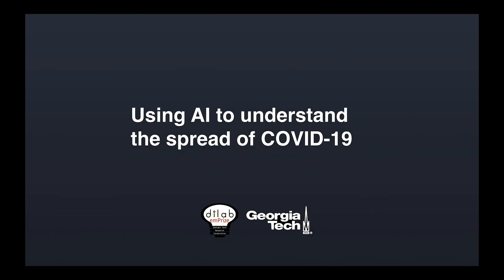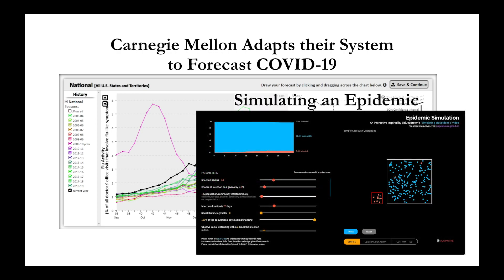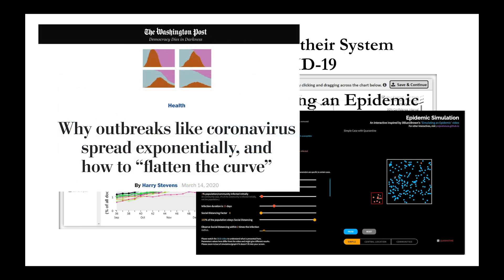COVID-19 has impacted billions of people around the world. While many areas are seeing some improvement now, the fight against the disease is not over yet. There's a lot of uncertainty in this time, and official guidance and measures are adapting constantly to best handle this. In the wake of this uncertainty, many news sources and other outlets have shared models and graphs of the disease spread to help people better understand the situation we are facing and how best to overcome it.